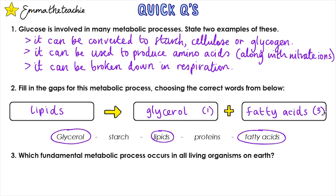You'll notice the number of molecules of each is also shown. Question 3: Which fundamental metabolic process occurs in all living organisms on Earth? The word 'all' is key here — it can't be photosynthesis, because that doesn't happen in all living things. Instead, it must be respiration, though there are other valid answers.